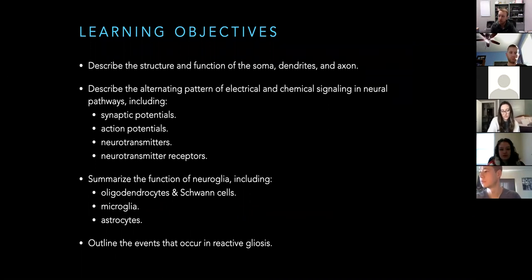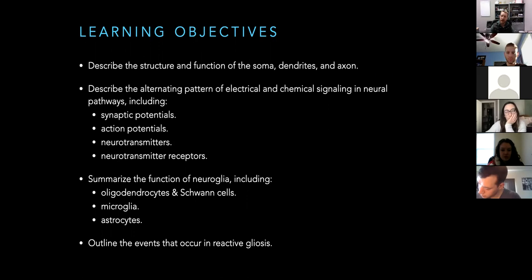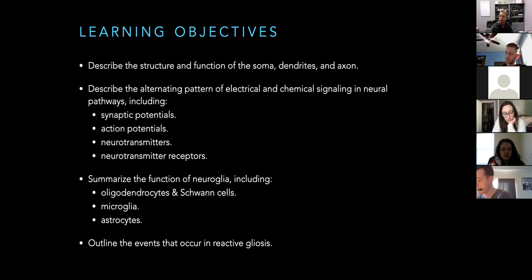Here are the overall learning objectives. Make sure you know what a neuron looks like — tell me about the soma, dendrites, and axon. Understand the electrical-chemical signaling pattern — that's how our nervous system works. Make sure you can at least name the neural glia and summarize their function. And we need to understand reactive gliosis, because that's what happens in injury. Reactive gliosis is good, except when it's not — it intends to help, but sometimes things go wrong.